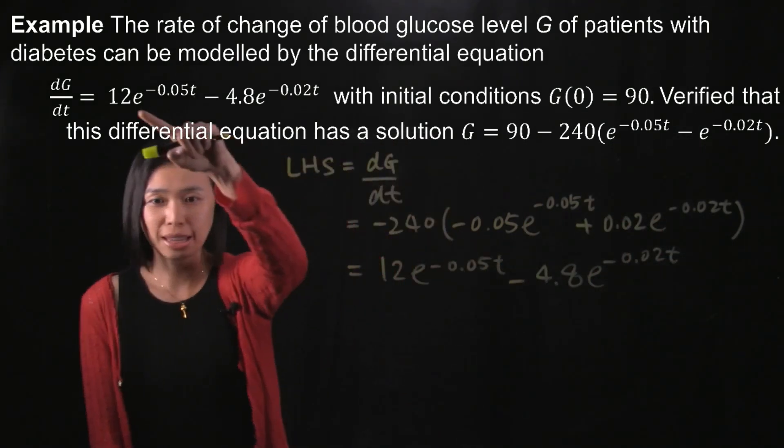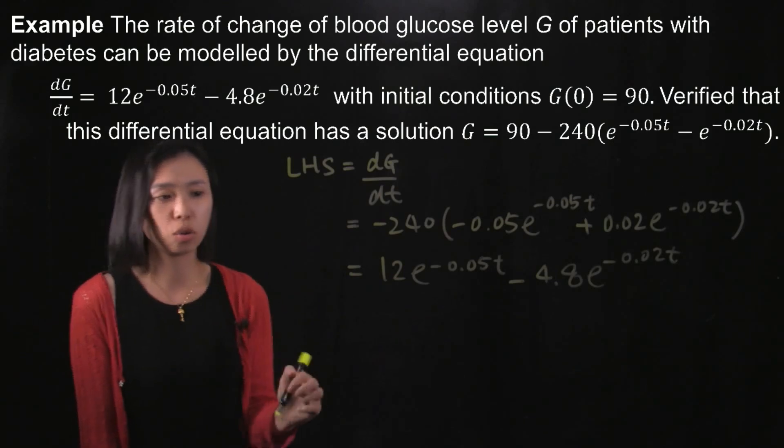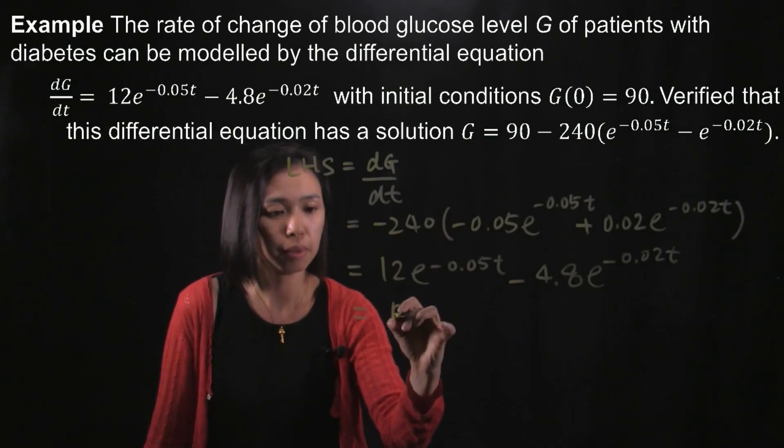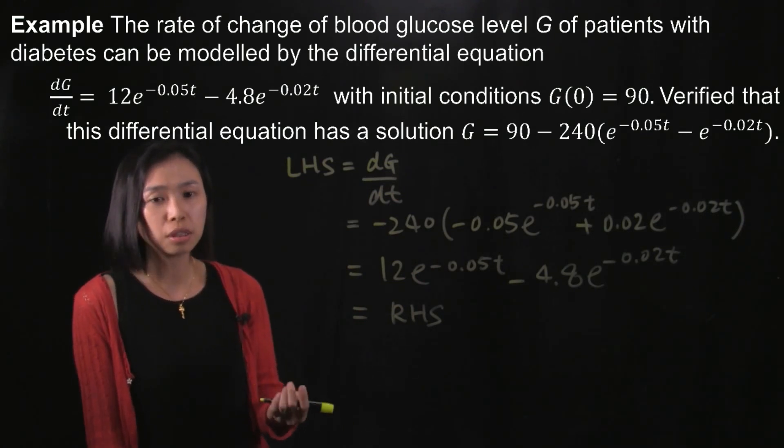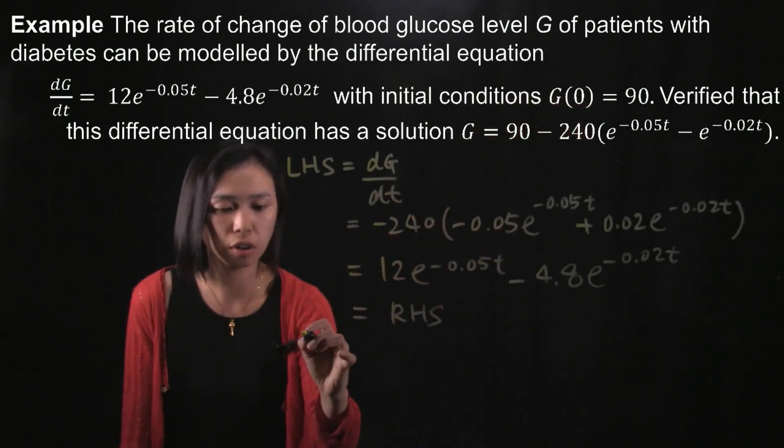So this is actually the same as given in the original question, which is the same as the right-hand side. But we haven't finished. We still need to check the initial condition G(0).